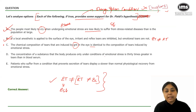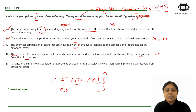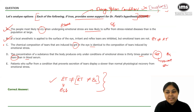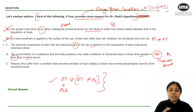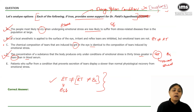Option D: 'The concentration of a substance the body produces only under stress is greater in tears than in blood serum.' When under stress, that substance appears in tears but not in blood serum, implying tears are being used to remove stress-related chemicals. This directly relates emotional tears to stress, supporting Dr. Field's hypothesis — tick and cancel.